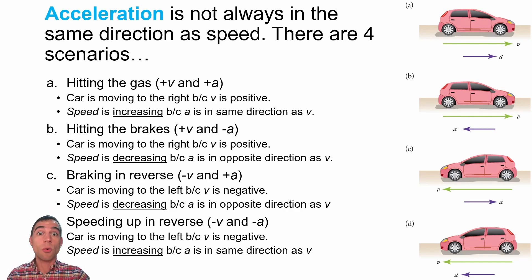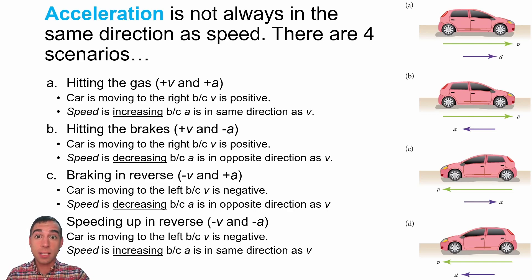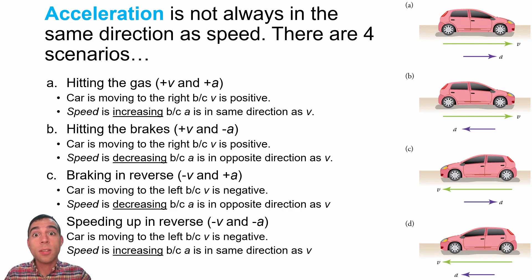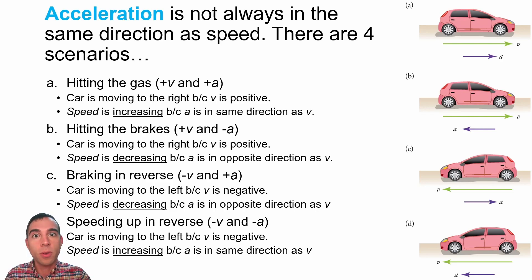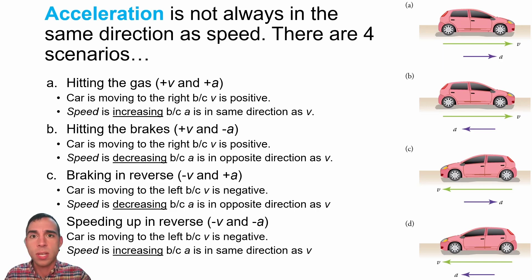We could be moving to the right with a velocity in the positive direction and accelerating to the right with an acceleration in the positive direction, which would cause us to speed up and go faster and faster to the right. On the other hand, we could be traveling to the right with a positive velocity and experience a negative acceleration, which would slow us down—counteracting the motion to the right by taking away speed. You might call this a deceleration, when the acceleration is in the opposite direction of the motion.